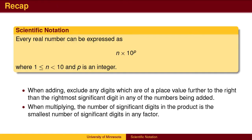To recap: scientific notation expresses any number as a single-digit number times a power of 10. When adding, do not include any digits as significant unless they are significant in all of the numbers being added. When multiplying, the number of significant digits in the product is the smallest number of significant digits in any factor.